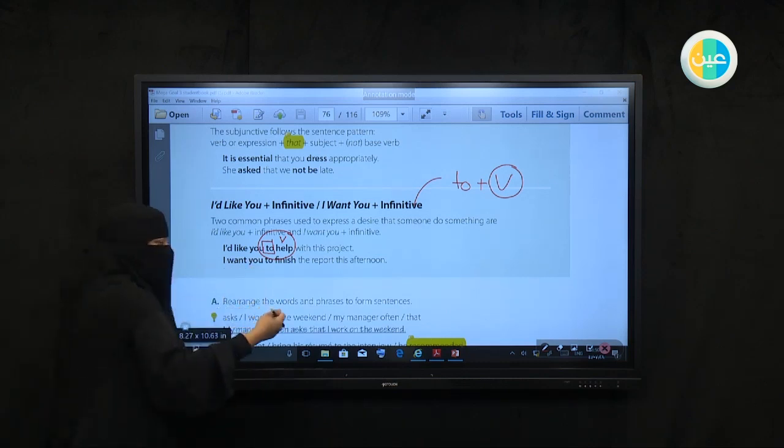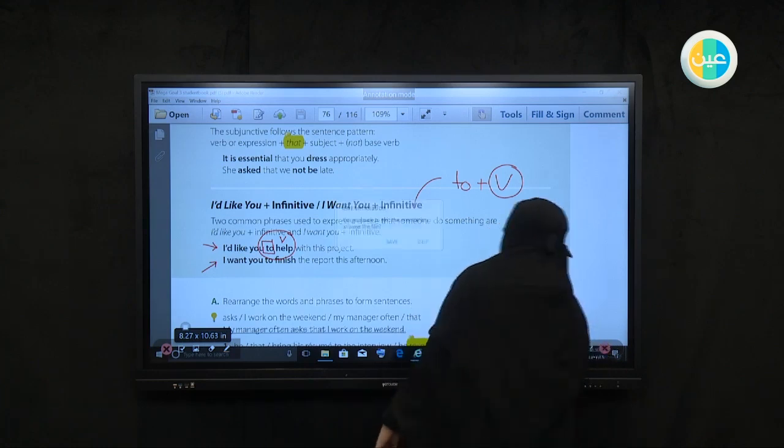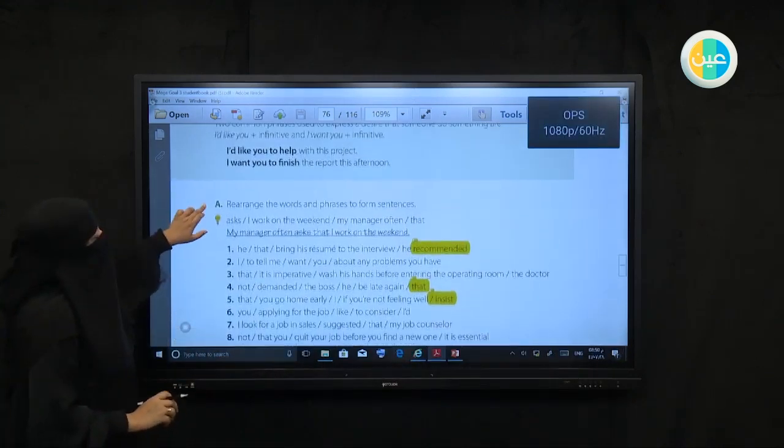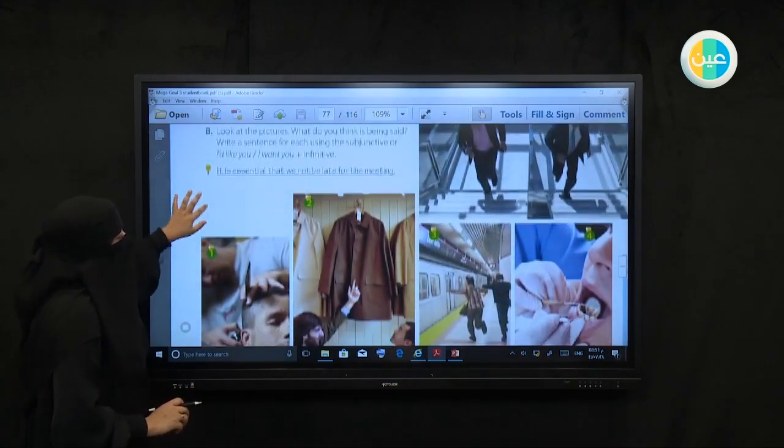Let's take an example. 'I'd like you to help with this project' - this is the infinitive. The infinitive is 'to' plus the verb, and the verb here is in base form with no additions - not '-ed' or '-s' or conjugations, but 'to help', 'to finish', 'to work', 'to play'. Number two: 'I want you to finish the report this afternoon'. Notice in number one there's 'I'd like', which has a kind of politeness - you can use it with your friend or someone older than you because it has a polite tone. But here 'I want you to finish' is when there's necessity.